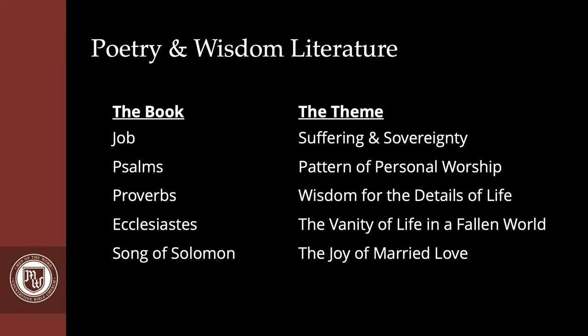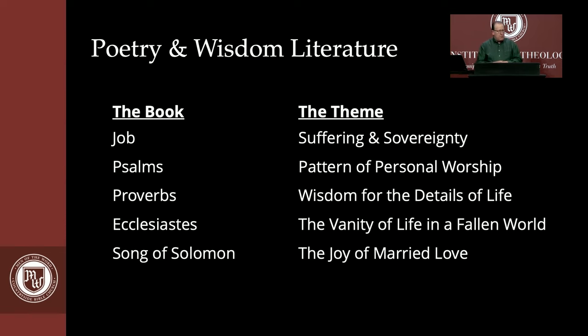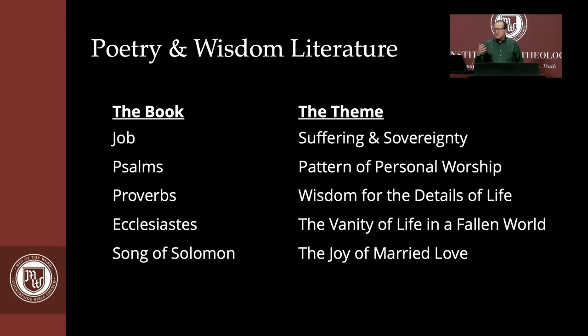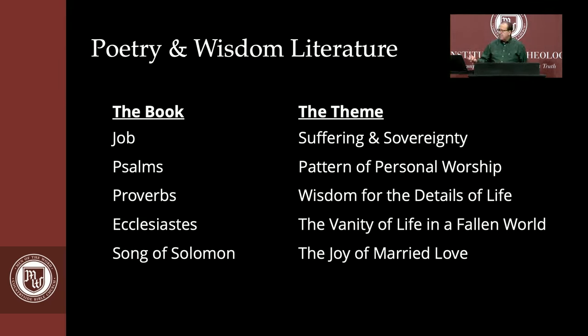The wisdom literature — what are we talking about? We're talking about five books: the book of Job, Psalms, Proverbs, Ecclesiastes, and Song of Solomon. And they're conveniently grouped in your Bible. Here are the overarching themes: Job is about sovereignty and suffering; Psalms, a pattern of personal worship, whether corporately or individually; Proverbs, wisdom for the details of life; Ecclesiastes, the vanity of life in a fallen world; and Song of Solomon, the joy of married love.